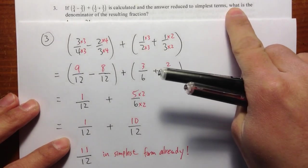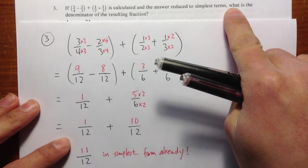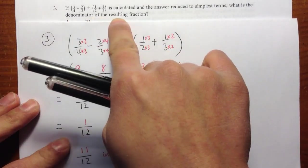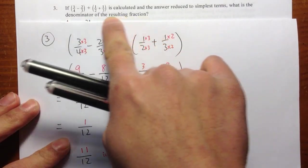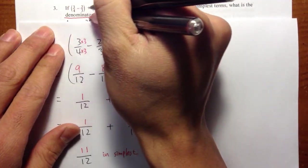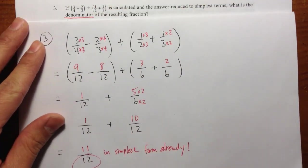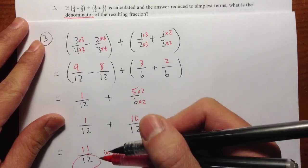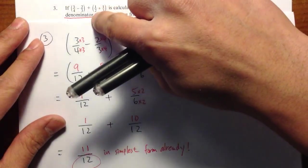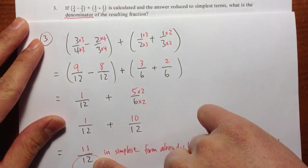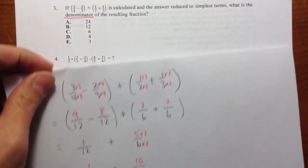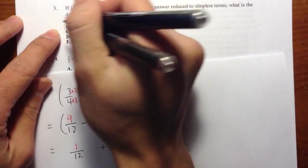And once it's in the simplest term, simplest form, what is the denominator of the resulting fraction? That's the question. And we're only looking at the denominator. So we're only looking at the 12. We're only looking at the 12 for the answer. Denominator of my answer is 12. So that's answer choice B.